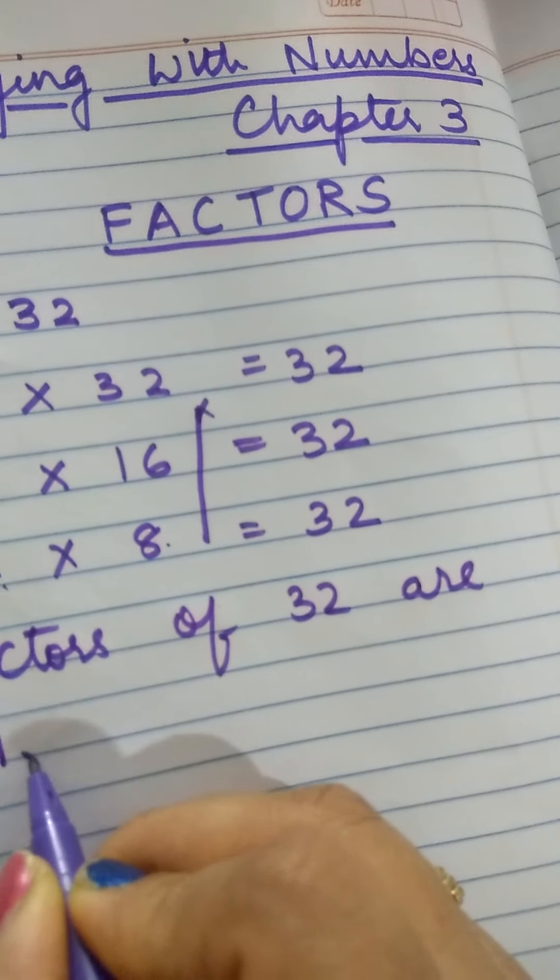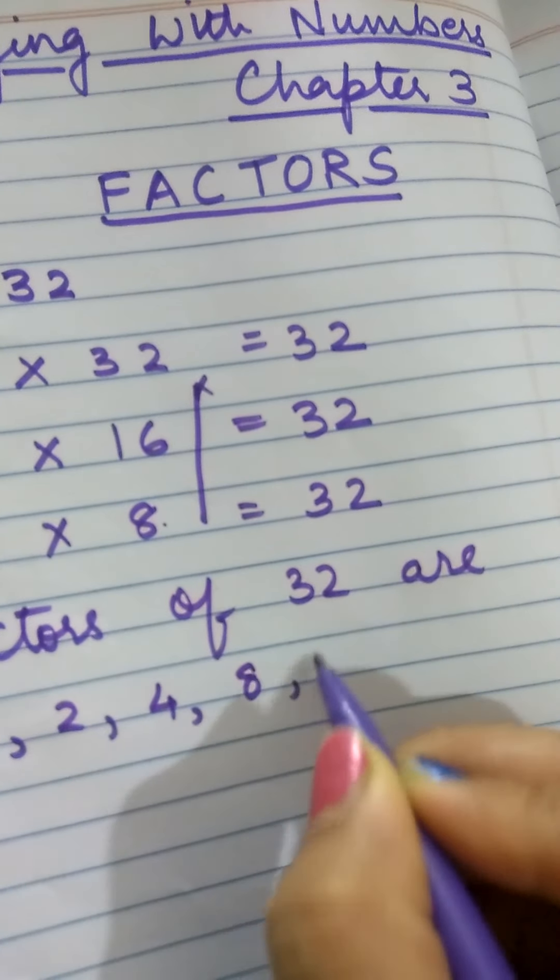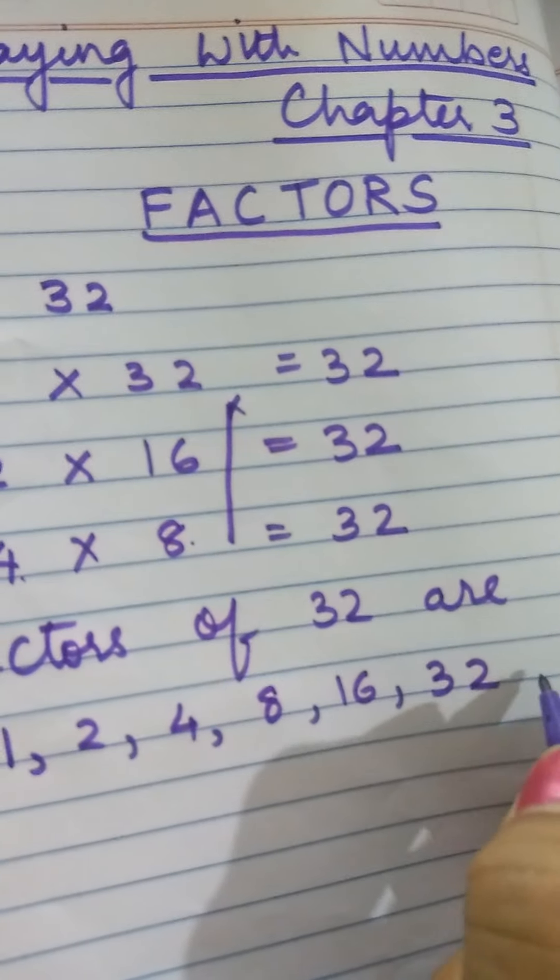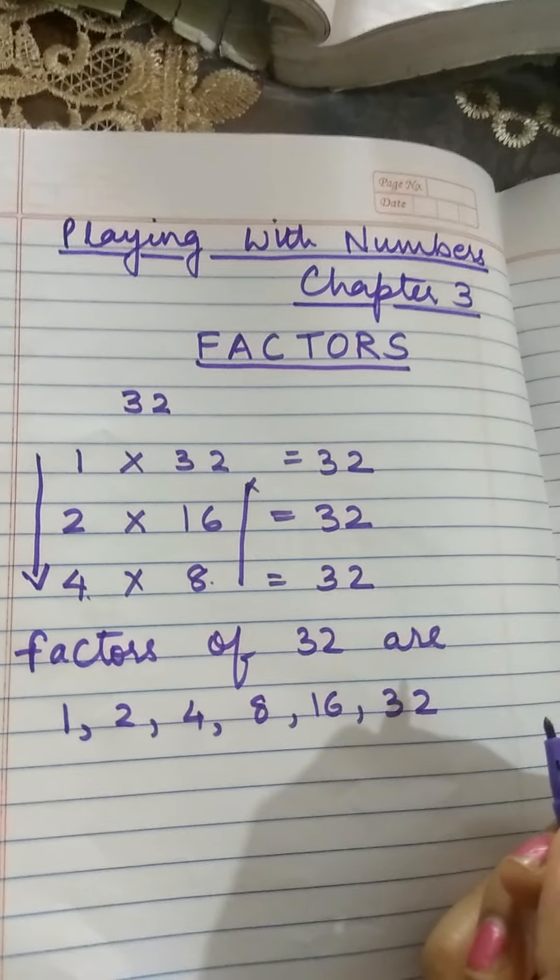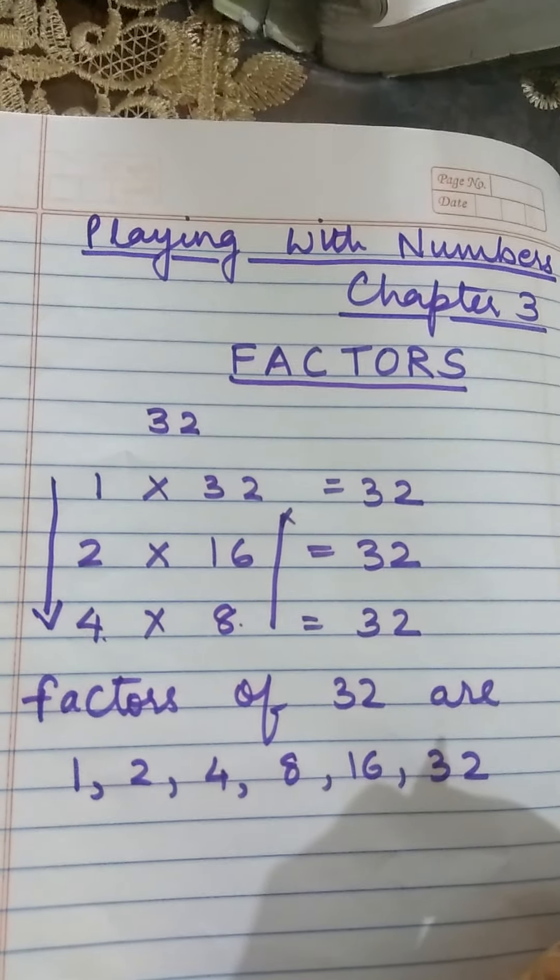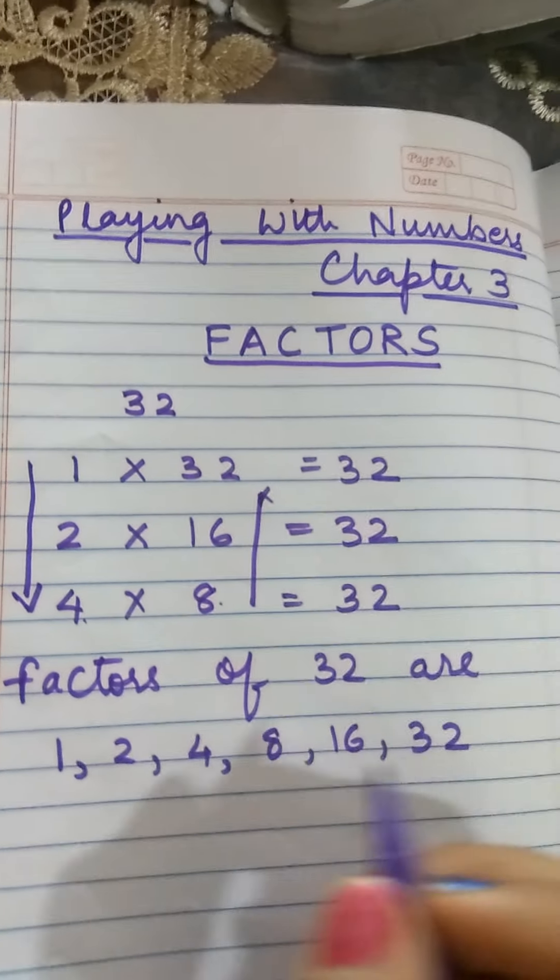So the factors of 32 are 1, 2, 4, 8, 16, 32. So these are the factors of 32. And this is the method of finding factors.